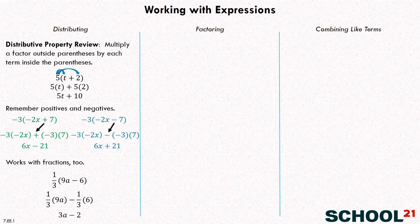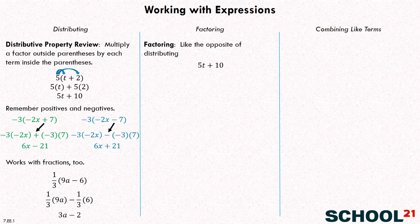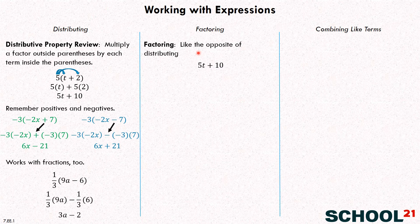Now let's look at factoring. Factoring is kind of like the opposite of distributing. We're going to start with the same example from before: five T plus ten. But we're going to pretend we didn't know that was the same as five times the quantity T plus two. We're going to move from five T plus ten to five times the quantity T plus two. The way we do that is we find the greatest common factor of the terms. What's a number that divides into both five T and ten? Five — and it's the greatest number that does.